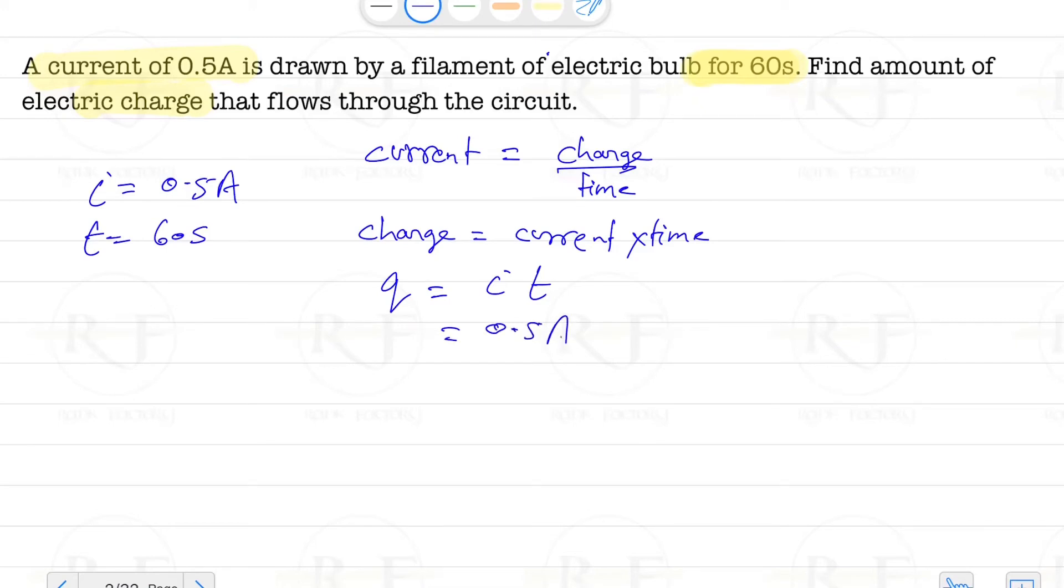0.5 ampere multiplied with 60 seconds, and the result will be equals to 30 ampere-second, and this will be equals to 30 coulomb. So our answer is: a charge of 30 coulomb is flowing through that circuit. This is